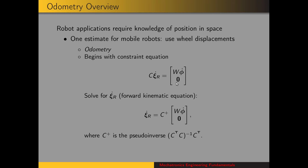To perform odometry, we rearrange this equation to solve for psi dot r, and that's given by this. To keep it general, we use the pseudo-inverse of the matrix C, given by this equation, because C is generally going to be rectangular. We'll assume that the robot parameters are such that there is a solution for psi dot r — this equation gives a solution and not just a least-squares fit.